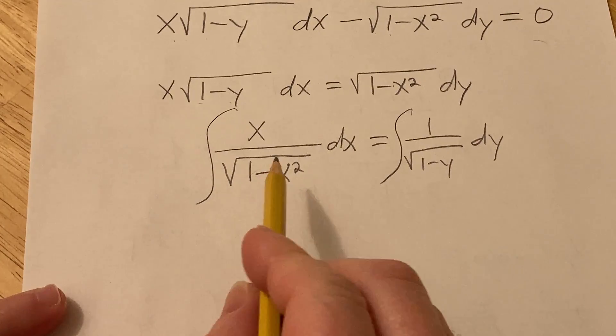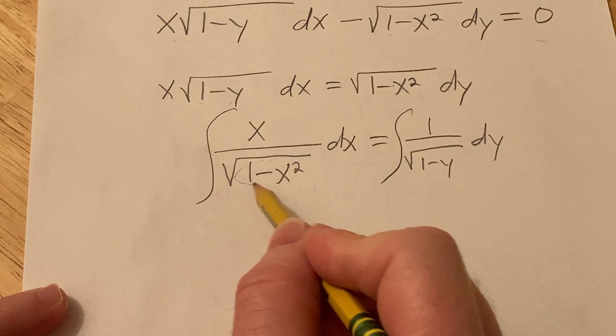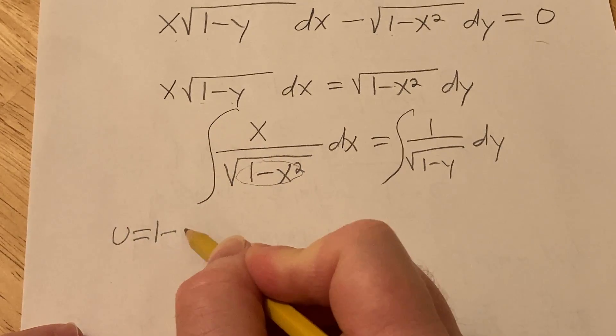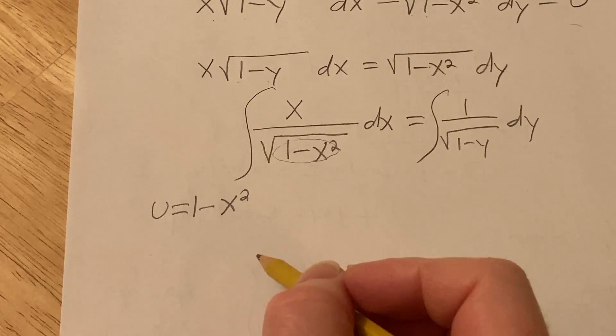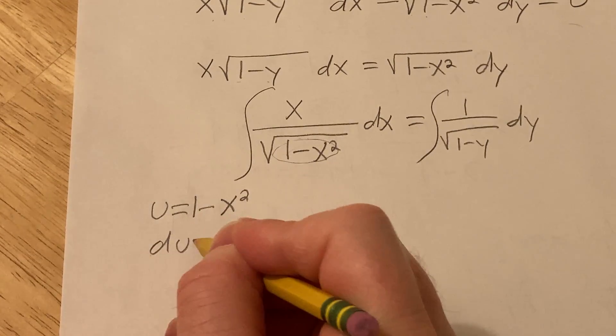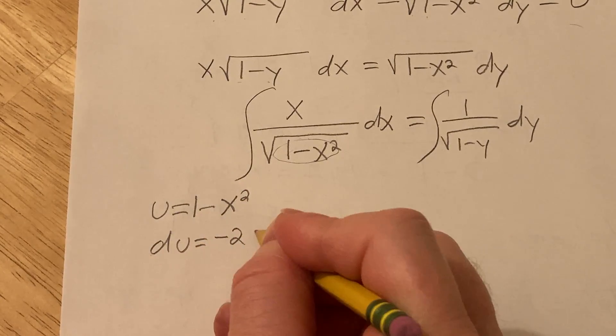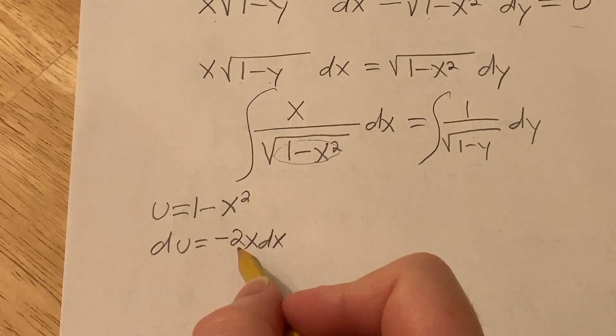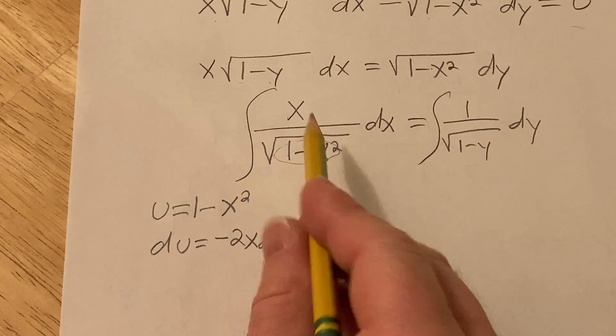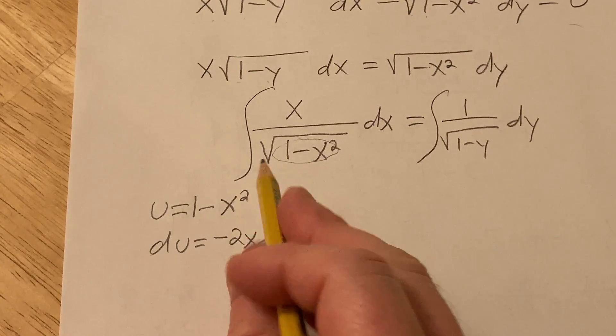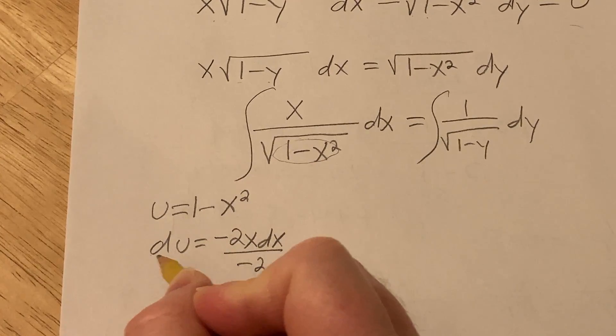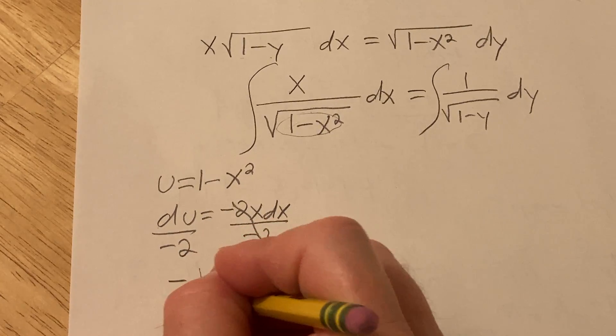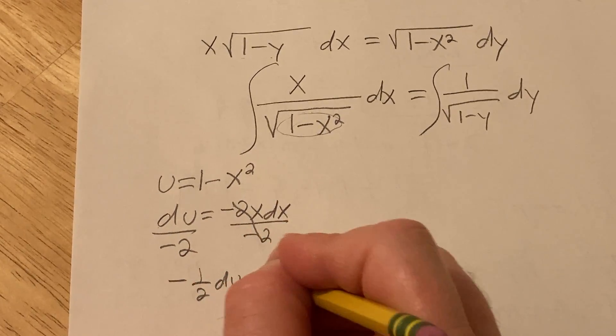This integral here requires a substitution. We can let u be the piece that's inside the square root. So u is 1 minus x squared. So then du is simply going to be negative 2x dx. And we don't have a negative 2 in the integrand, so we want to make this look like this. So we'll divide by negative 2. So we get negative 1 half du equals x dx.